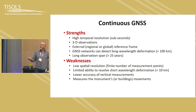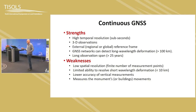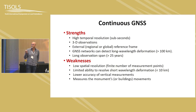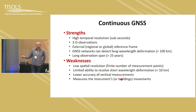The strengths of GNSS include high temporal resolution, 3D observations, and an external reference frame. With a GNSS network, we can detect really long-wavelength deformation, and we already have an observation span of 25 to 30 years. The weaknesses are low spatial resolution, limited ability to show short wavelengths, and the vertical component is less accurate because processes like tropospheric delay and hydrology affect it. We also measure monument movement, not surface movement.